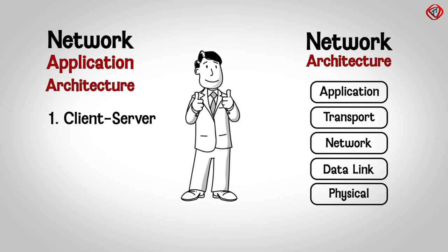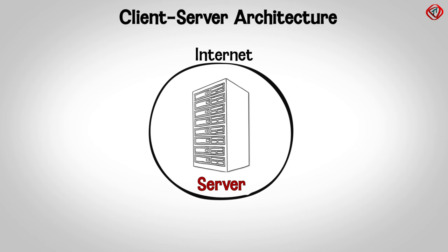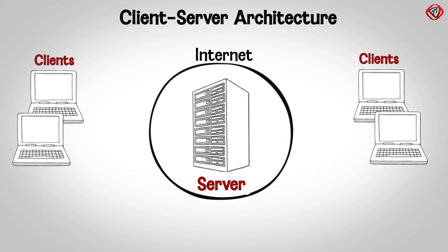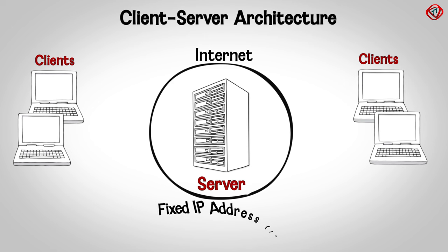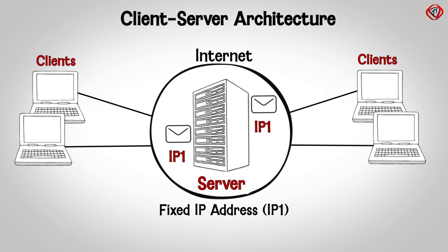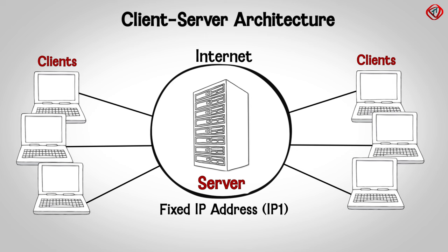In client-server architecture, there is an always-on end system called a server, which receives requests from many other end systems called clients. The server has a fixed IP address, say IP1, so a client can always contact the server by sending a message to the server's IP address. If the number of clients is high, then a single server cannot handle all requests.